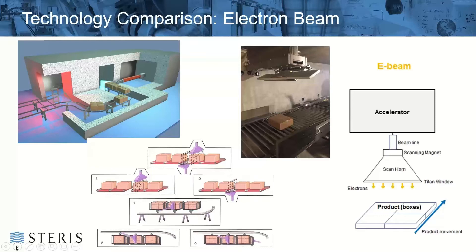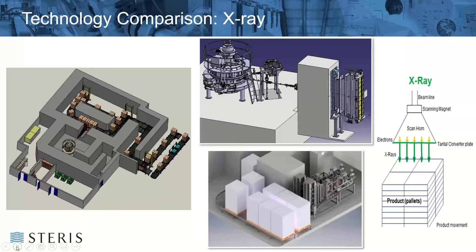X-ray looks very similar — in fact, for the most part identical — to the e-beam assembly. The difference is what happens to those electrons after they come out of the scan horn. In order to become x-ray, they have to hit a metal plate made out of tantalum — that's the converter process. Most electrons won't go through due to the density of the metal, but what does come through will be photons, just like gamma photons but with more variability in energy levels. Those photons can very heavily penetrate a product, giving you the benefit of deep density penetration without having to have a radioactive source.